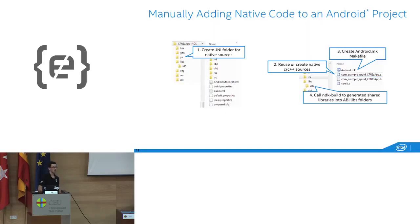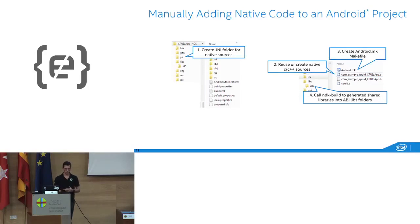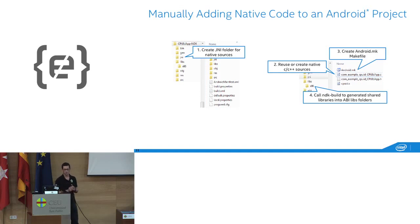To get the NDK, go to the Android developer website and download it — it's specific to your platform. It's usually an archive, and since the latest release it's a self-extracting archive. You can put this archive not too far from your SDK folder. Inside the archive, the most important script is ndk-build. On Windows you use ndk-build.cmd.